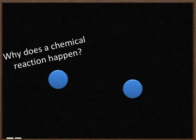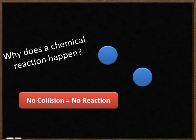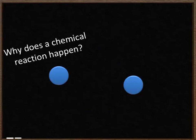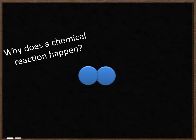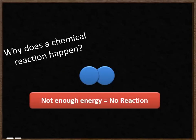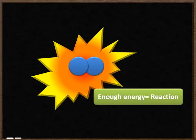The first thing we're going to think about is why does a chemical reaction happen? What causes two particles of a chemical to react together? If those two particles don't collide with each other, there won't be a collision, so no reaction will occur. If they collide but with a very, very small amount of energy, very slowly, then there still won't be a chemical reaction. For the chemical reaction to occur, the particles need to collide with a sufficient amount of energy.